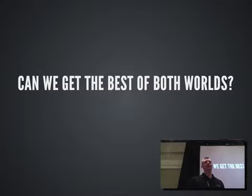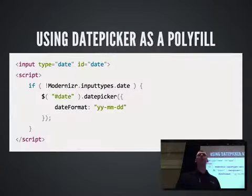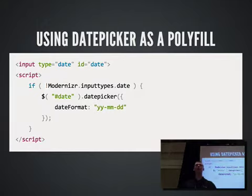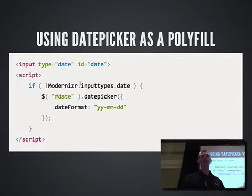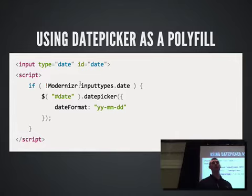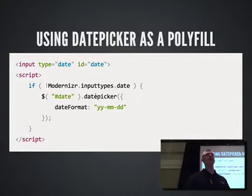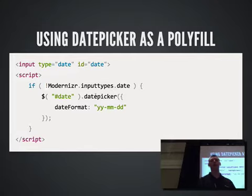Unfortunately, the answer at the moment to whether you can get the best of both worlds is no — you really just have to pick one control or the other. However, if you just need a basic control, just need a date from a user, jQuery UI actually makes for a good polyfill. You can use Modernizr or whatever you'd like to detect whether native date support is available, and if it's not, only use the DatePicker under those circumstances. That way you'll always have some sort of calendar control, but use the native one where it's available.